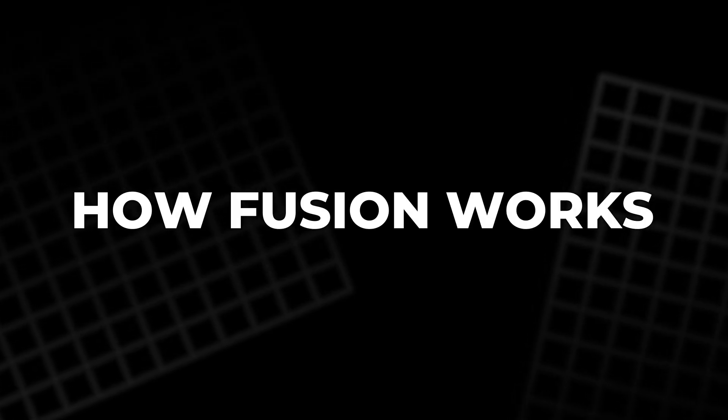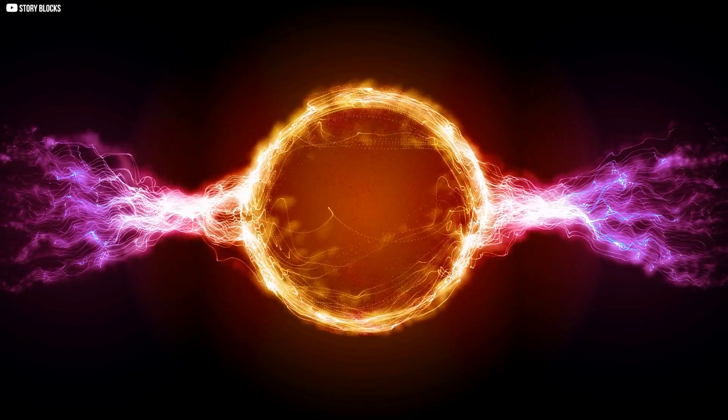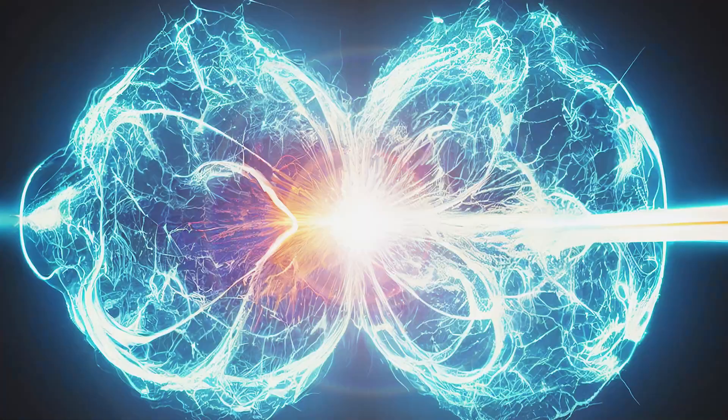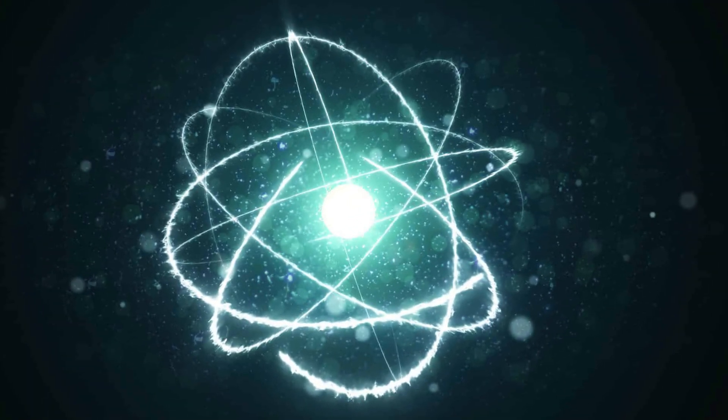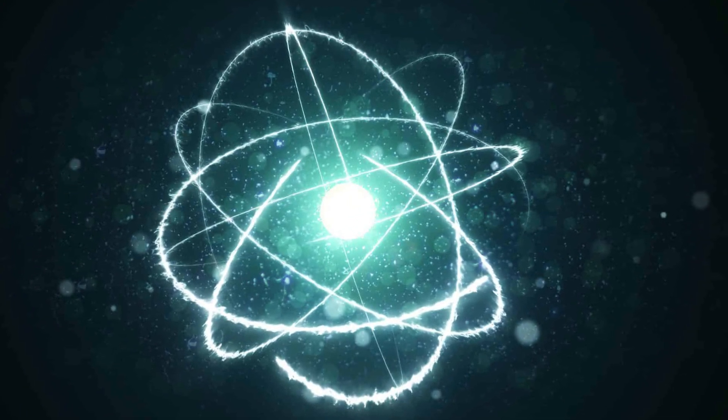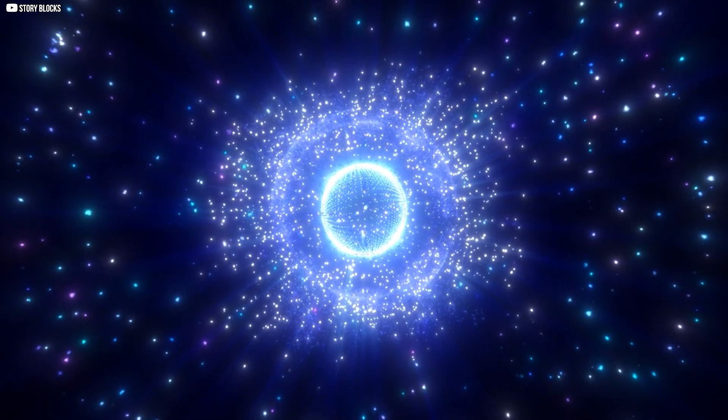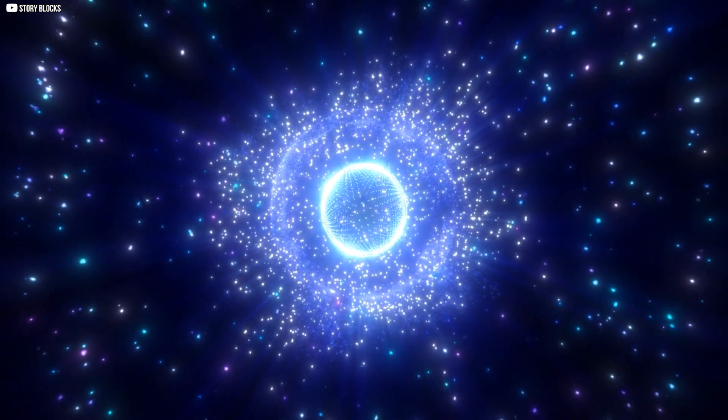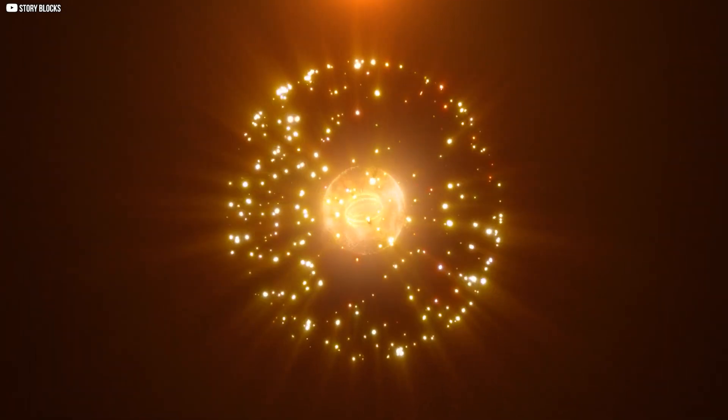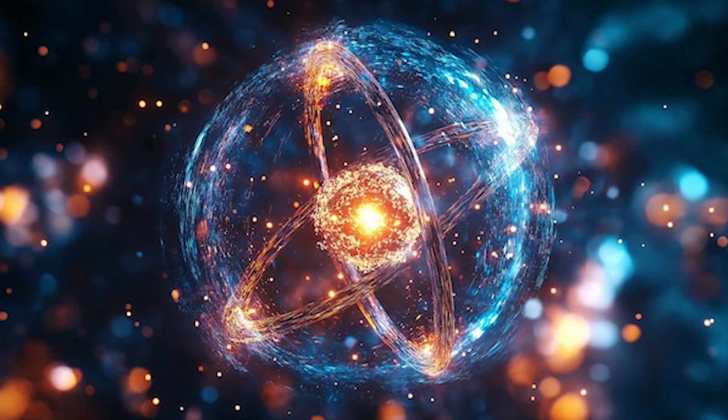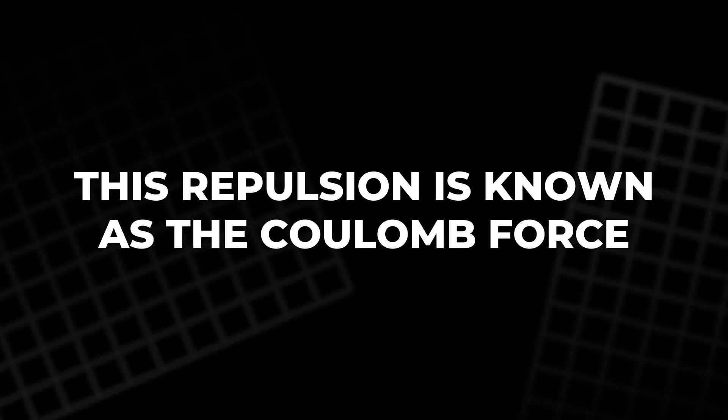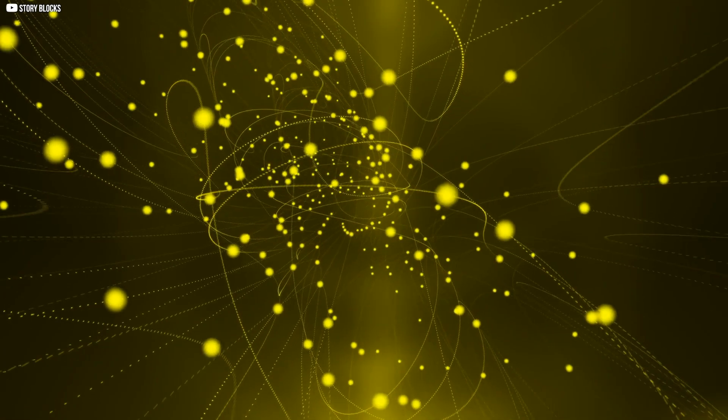At its heart, fusion is about forcing atoms to do something they naturally resist: come together. Specifically, we're talking about the cores of atoms, called nuclei. Most of the time they repel each other. Why? Because they're positively charged, and just like magnets, similar charges push away from one another. This repulsion is known as the Coulomb force.